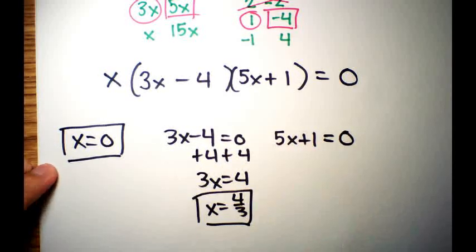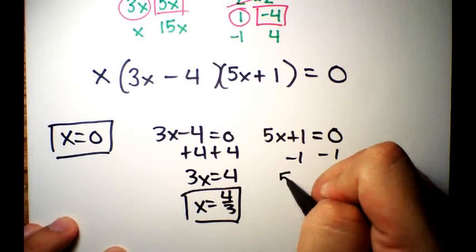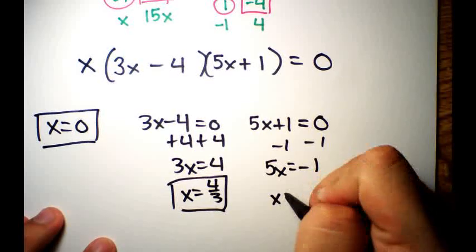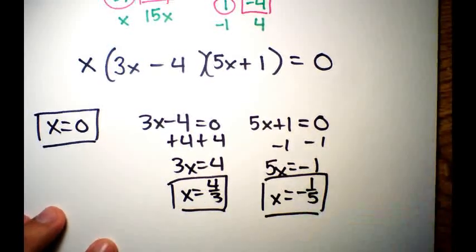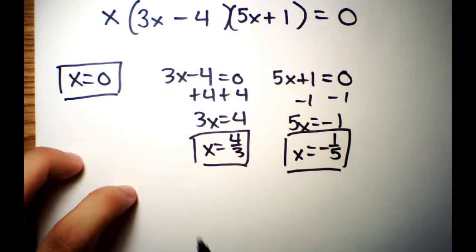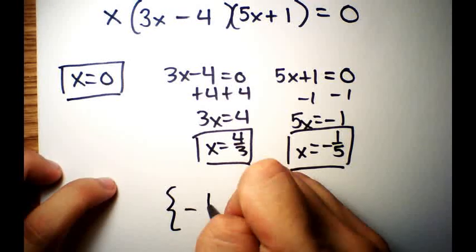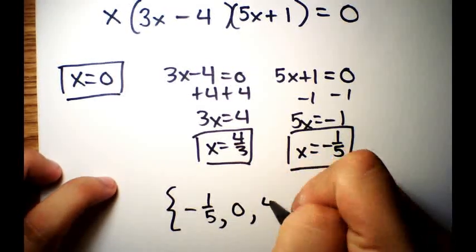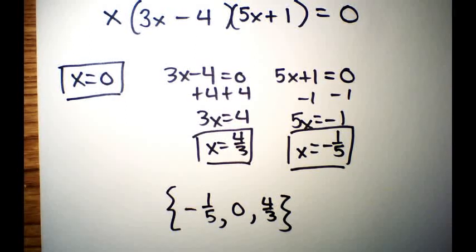From 5x + 1 = 0: subtract 1 and divide by 5, giving x = -1/5. Leave answers as improper fractions. So the three answers for example four are x = 0, x = 4/3, and x = -1/5. Written in numerical order: {-1/5, 0, 4/3}.